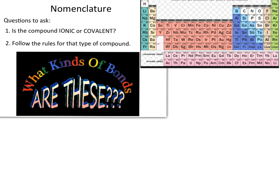We're going to be looking at nomenclature from the perspective of ionic compounds, but any time you're naming a compound or molecule, you need to ask yourself whether or not you have an ionic or covalent compound. For ionic compounds, you're looking for a metal and a non-metal, or a positively and negatively charged ion. For covalent compounds, you're looking for non-metals or metalloids and non-metals.